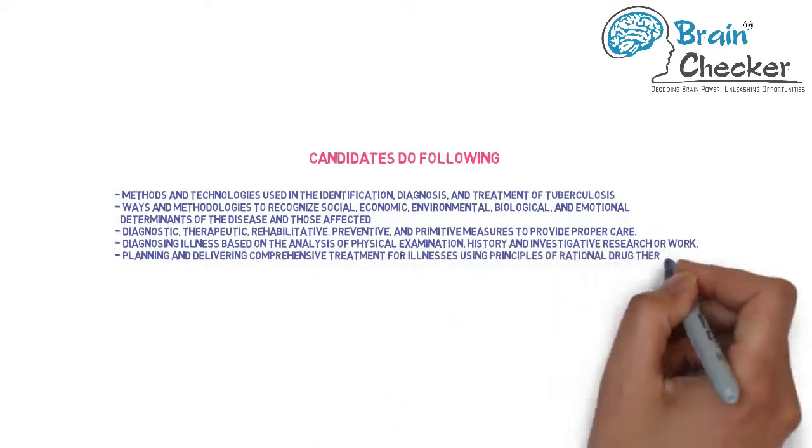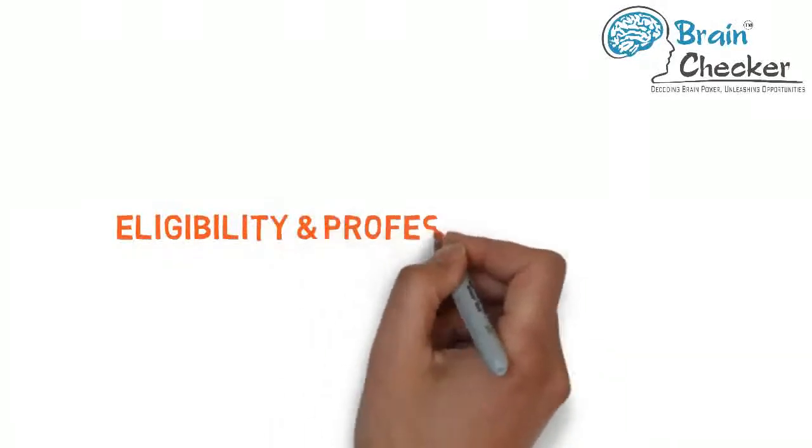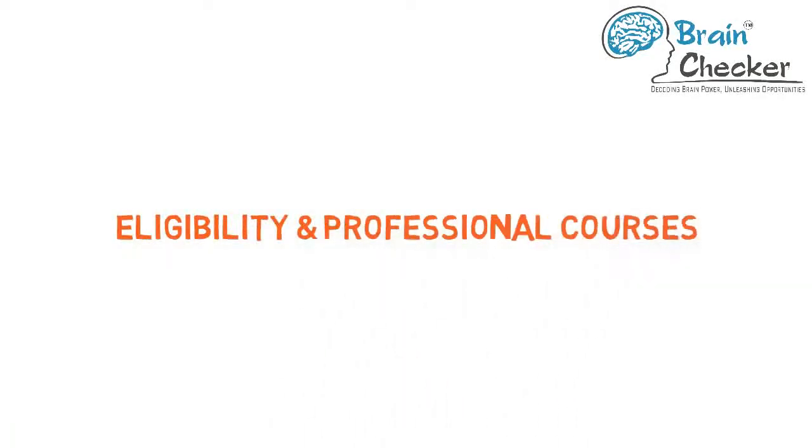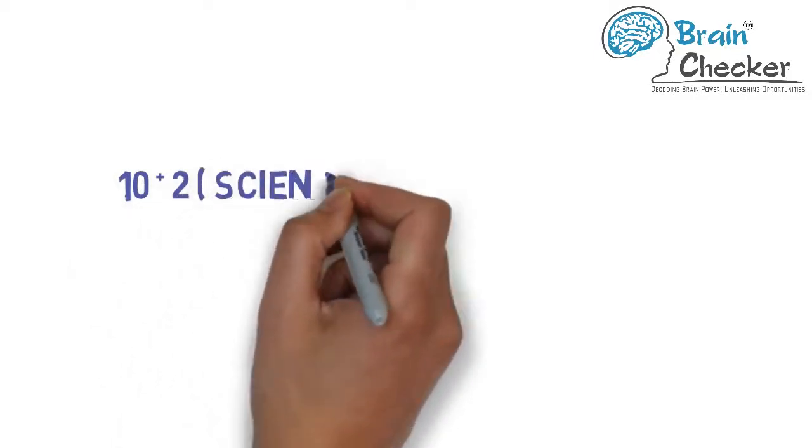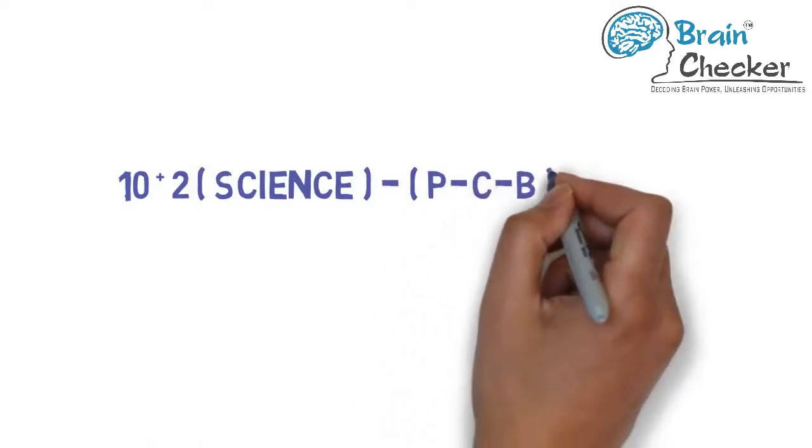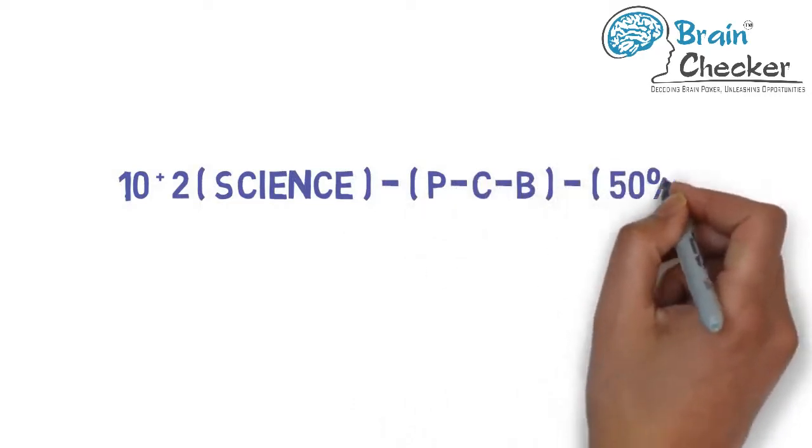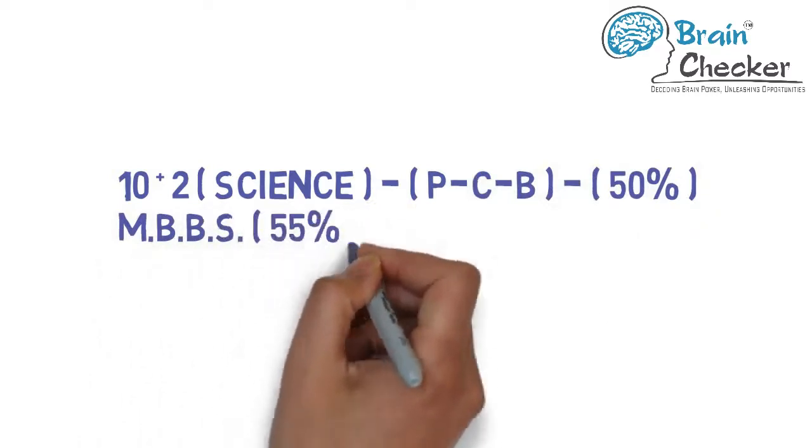Now let's go to eligibility and professional courses. Candidates who wish to do MD should have cleared 10 plus 2 or equivalent examination with a minimum of 50 percent marks in physics, chemistry, and biology. Prospective candidates should have completed an MBBS degree with minimum 55 percent marks from a recognized university board.